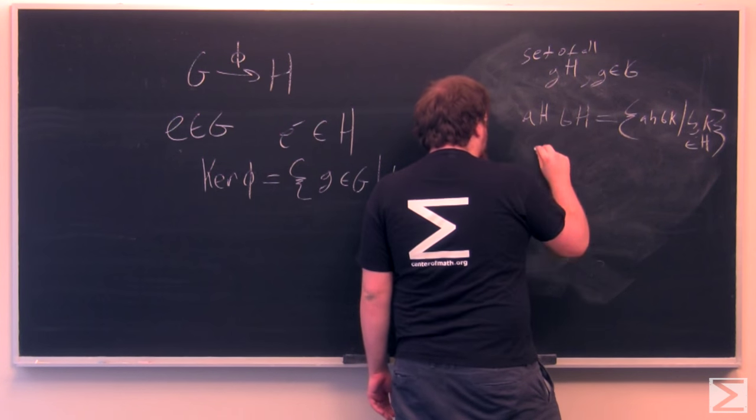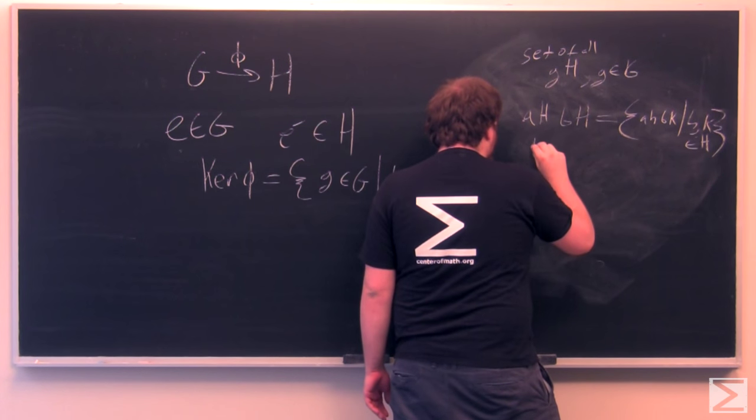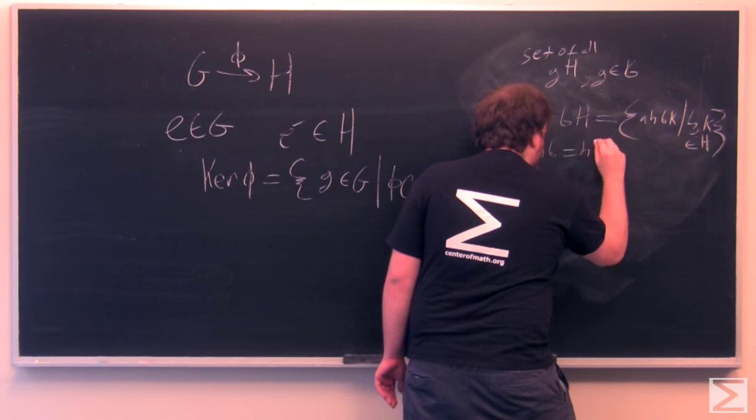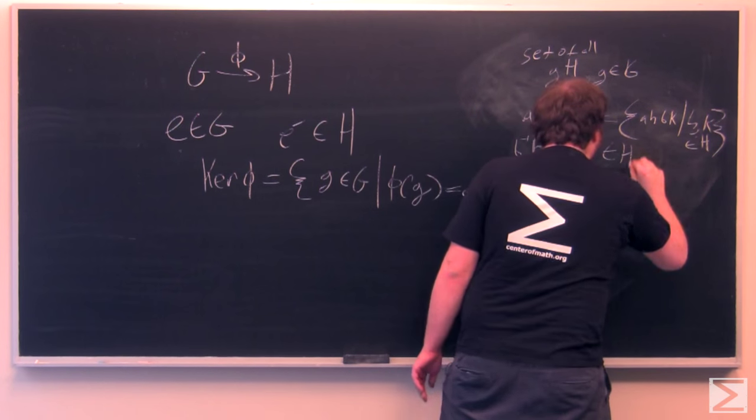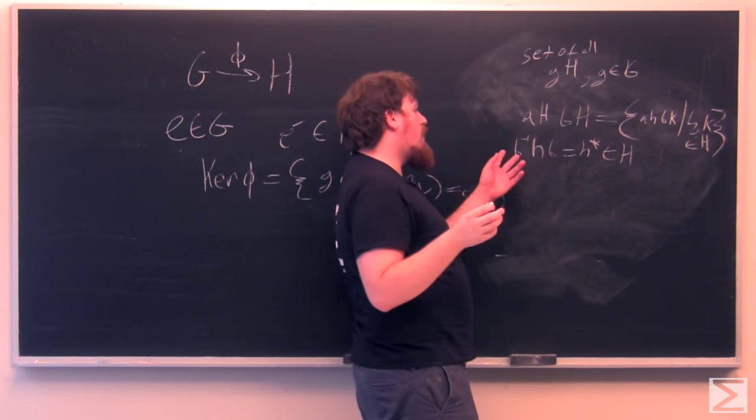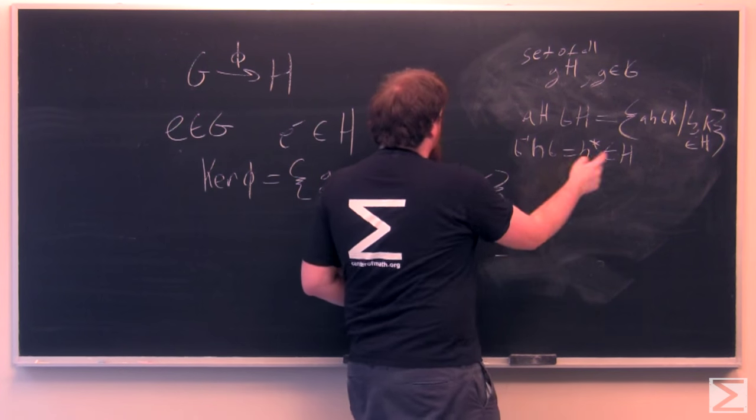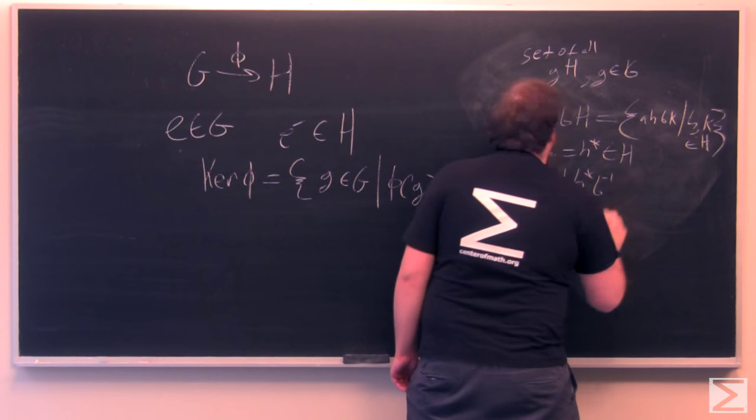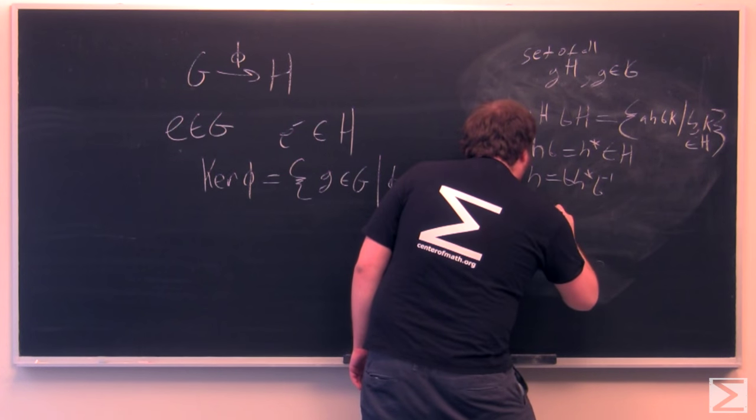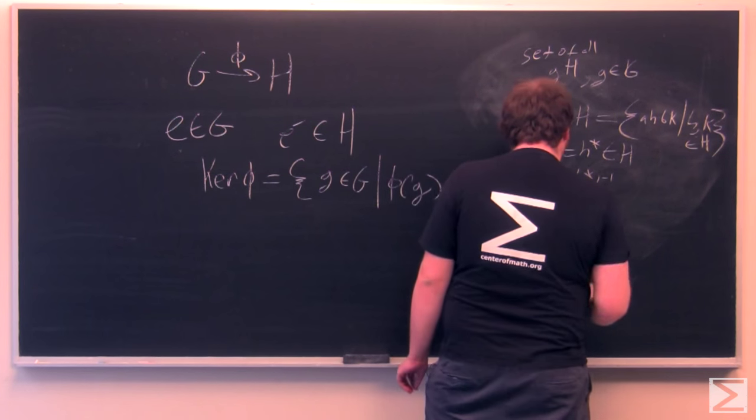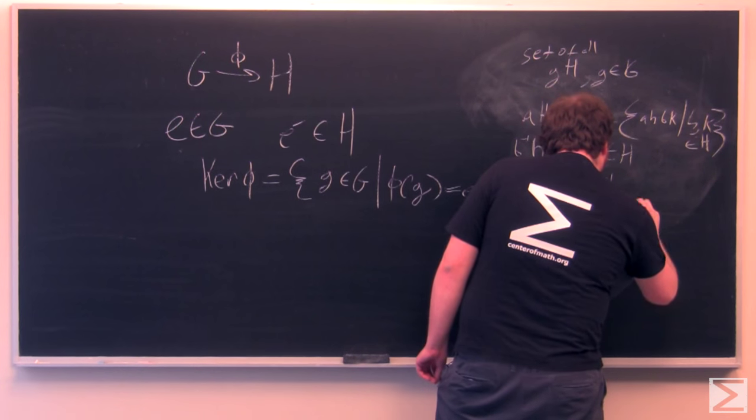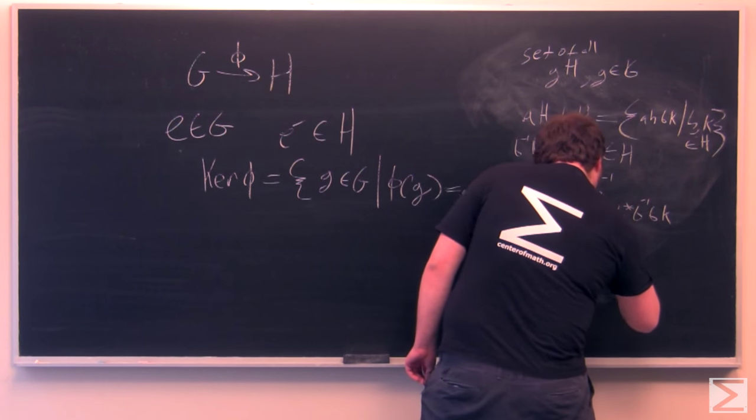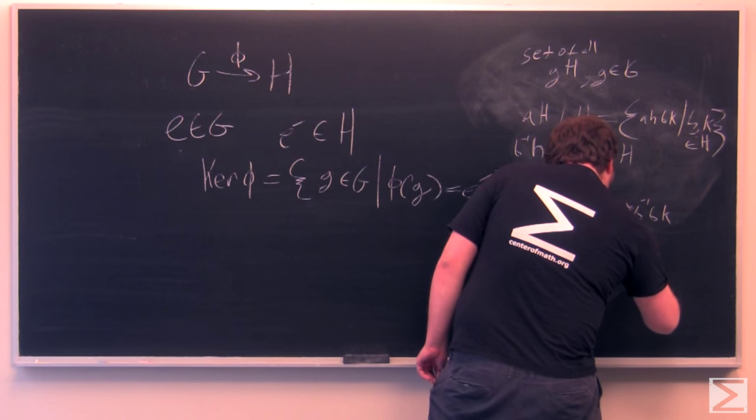Because H is a normal subgroup, we note that since H is in the normal subgroup H, then B inverse HB equals some H star, which is also in H. We can multiply it by B on the left and B inverse on the right to get H equals BH star B inverse. And that means that AHB K equals AB H star K.